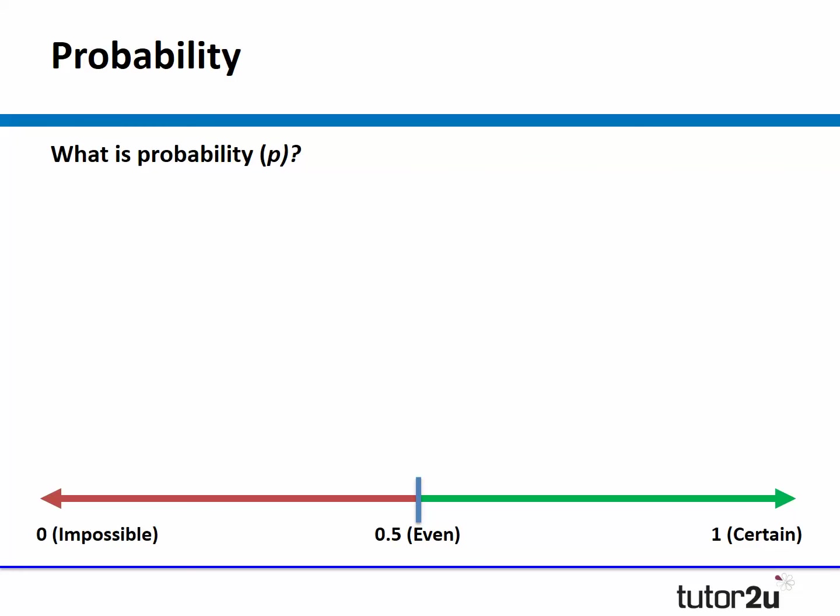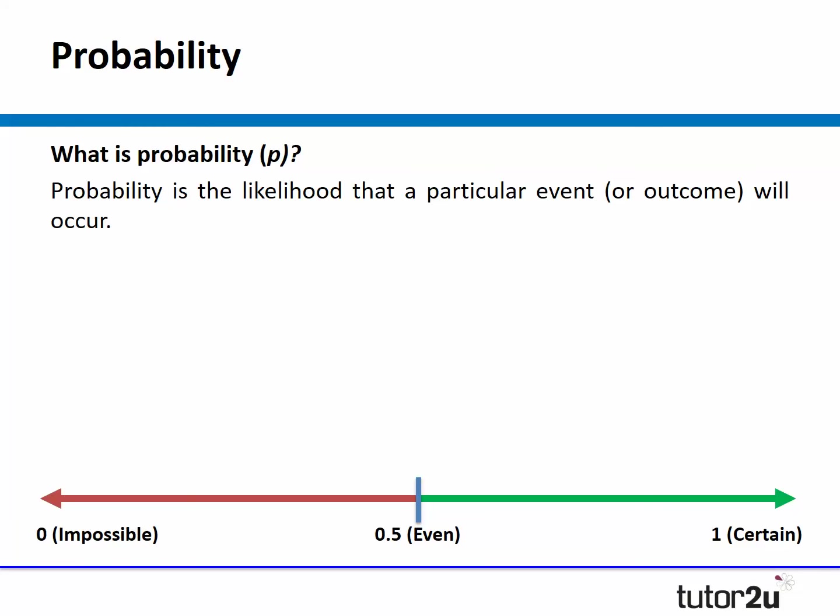Starting with definitions: probability is really a mathematical term — it's the likelihood that a particular event or outcome will occur. Probability can be expressed in many different ways, but it's really key that you insist from day one that your students get used to expressing probability as a decimal, on a scale from zero (impossible) to one (definitely going to happen), with 0.5 being a 50-50 chance.